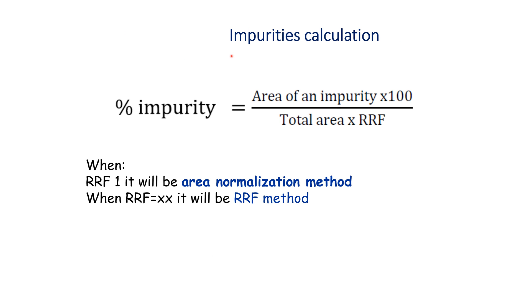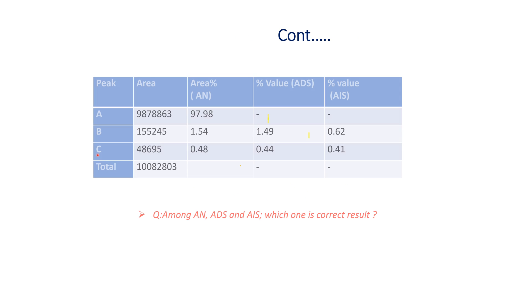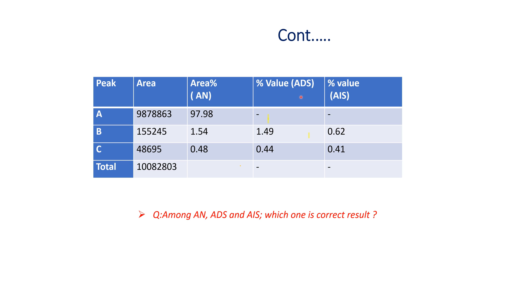An impurity is calculated by the following formula: percentage of an impurity equals the area of the impurity multiplied by 100, divided by total area multiplied by RRF. When RRF is 1, it is the area normalization method or area percent method. When RRF has some other value, it is the RRF method. Impurities B and C were calculated by the area percent method (AN), by using diluted sample (ADS), and by using impurity standard (AIS).